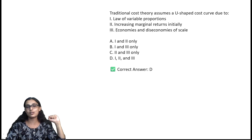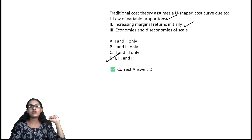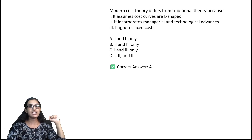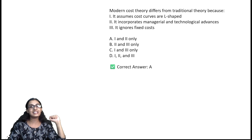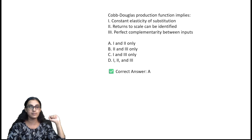Traditional cost theory assumes a U-shaped cost curve due to the law of variable proportions — increasing marginal returns initially, followed by economies and diseconomies of scale — option D. Modern cost theory differs from traditional theory because it assumes cost curves are L-shaped and incorporates marginal technological advances — option A.